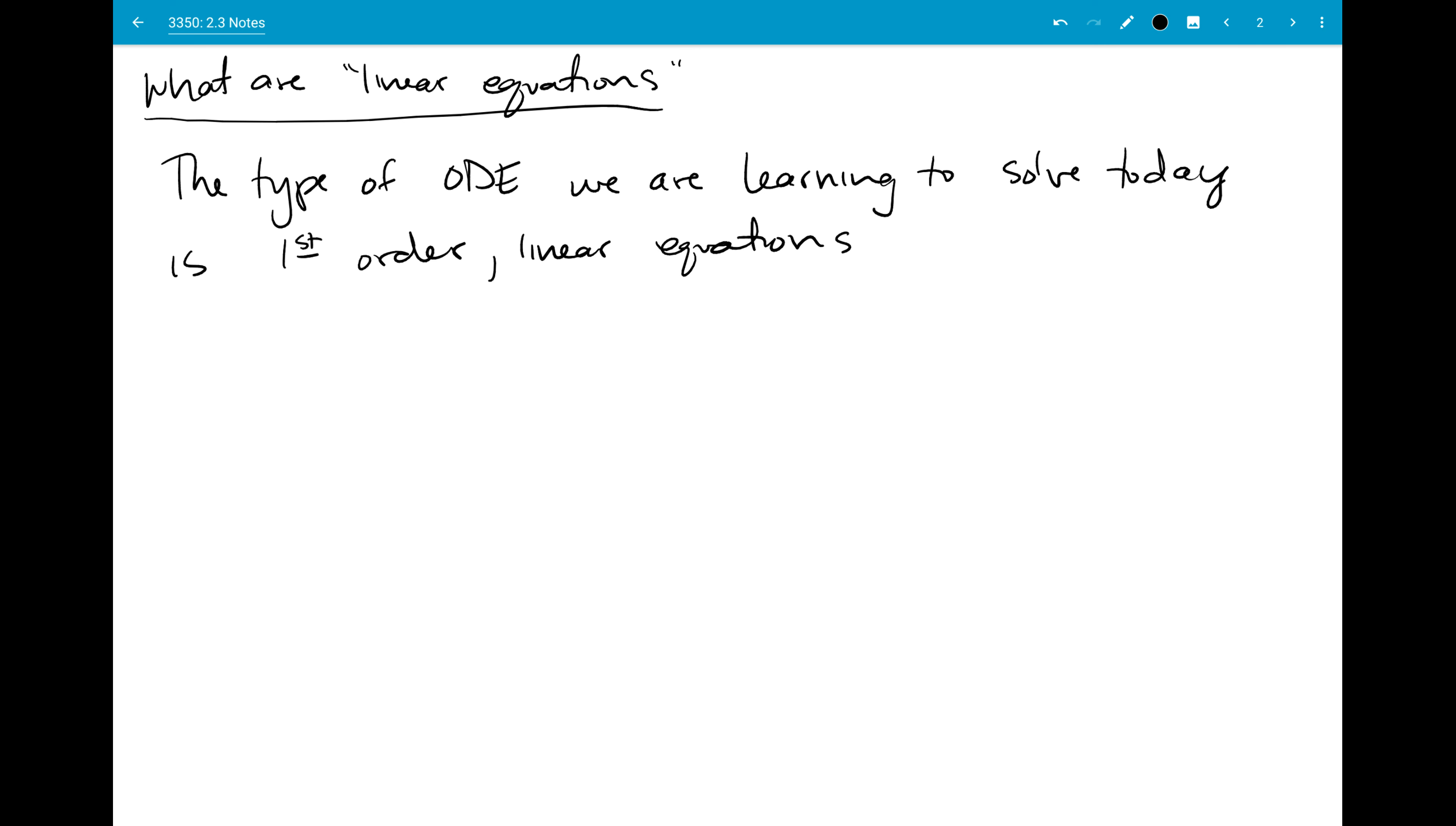That means you don't have interactions between y and dy/dx, or squares and square roots and all that stuff. The way that you can write this is having a1(x) times dy/dx plus a2(x) times y equal to g(x), where a1, a2, and g are functions of our independent variable x. And y is the thing that we want to know the solution to. We're curious about how y(x) behaves in this differential equation.